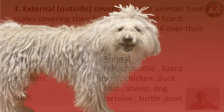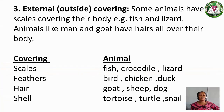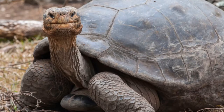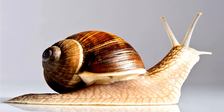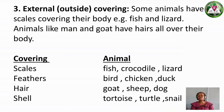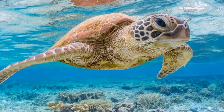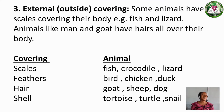We also have Shell as a type of external covering. The animals with shells are tortoise and snail. Tortoise is a reptile that lives in water. When you look at it, it looks like a shell covering its body.